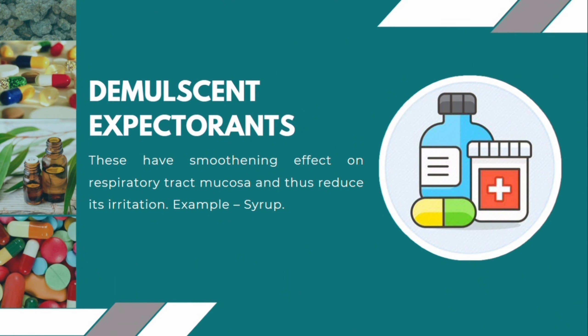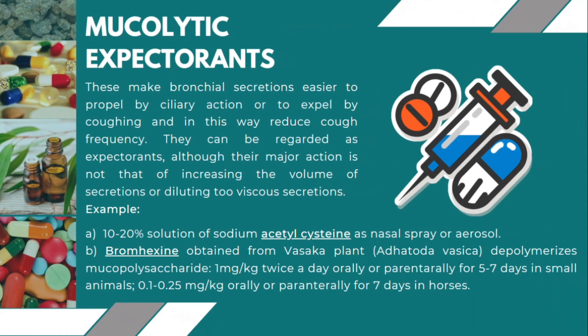Demulcent expectorants have a smoothening effect on the respiratory tract mucosa and thus reduce its irritation. Examples include syrups. Mucolytic expectorants make bronchial secretions easier to propel by cilia or to expel by coughing, and in this way reduce cough frequency. They can be regarded as expectorants, although their major action is not that of increasing the volume of secretions but rather diluting overly viscous secretions.